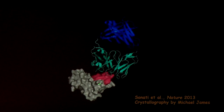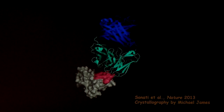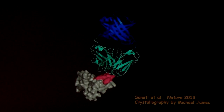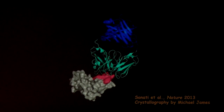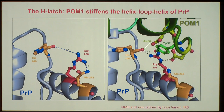I wanted to understand how this works, so I got together with Michael James, who made co-crystals of POM1 together with the prion protein. My hope was that this might show that the prion protein denatures or is somehow distorted, but this did not happen. We were stuck. Then Luca Varani at the Instituto di Ricerche Biomediche in Bellinzone suggested looking at this by molecular dynamic simulation, because the crystal structure doesn't tell you what happens to the proteins over time. The molecular dynamics showed that two parts of the prion protein are pretty far apart from each other, but when POM1 comes in, there are a lot of hydrogen bonds forming a network, and these two residues come very close and lock.